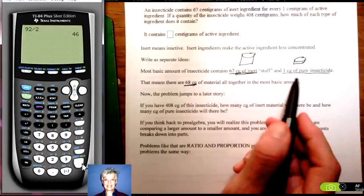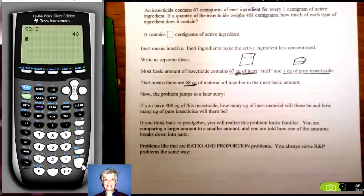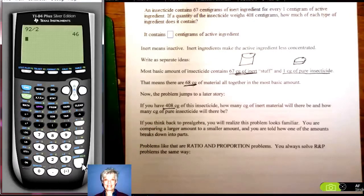So this is the ratio of inert to active. Now somebody brings you 408 centigrams. I didn't finish reading the problem, did I? Let's go back to the beginning. An insecticide contains 67 centigrams of inert ingredient for every one centigram of active ingredient. So we decided that in a group of 68 centigrams there are 67 inert and one active.